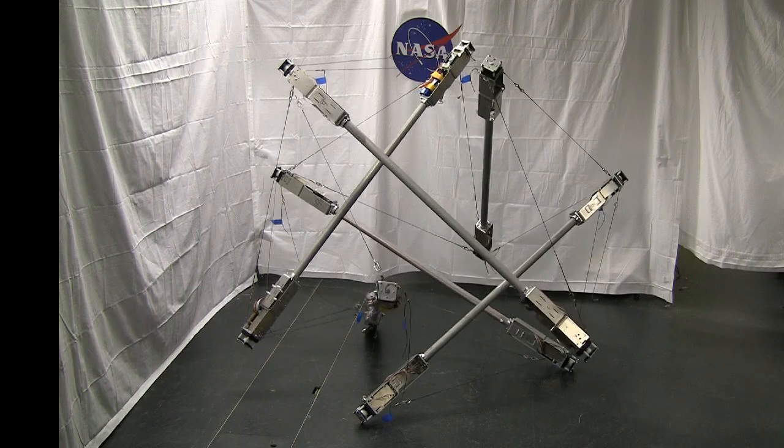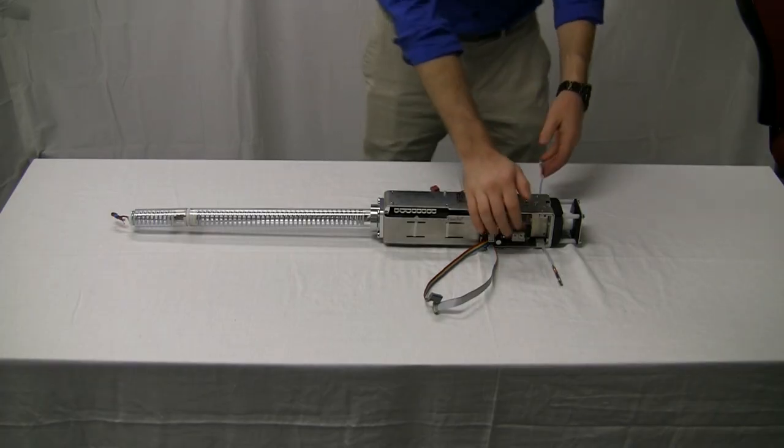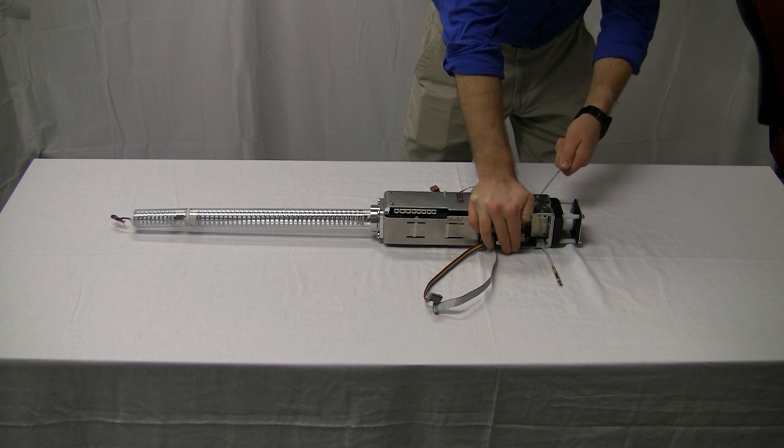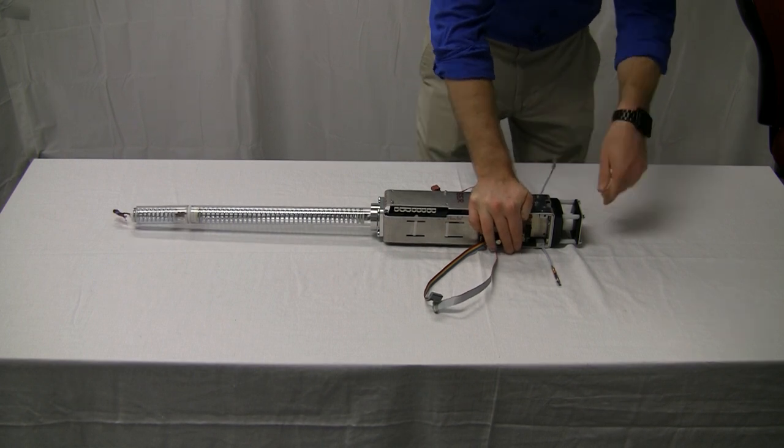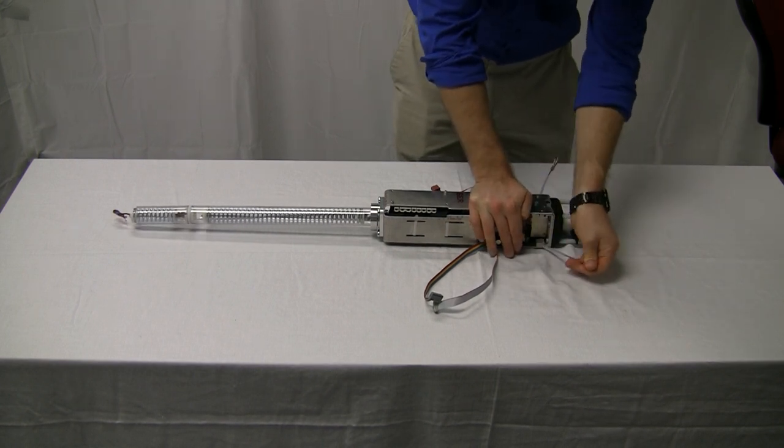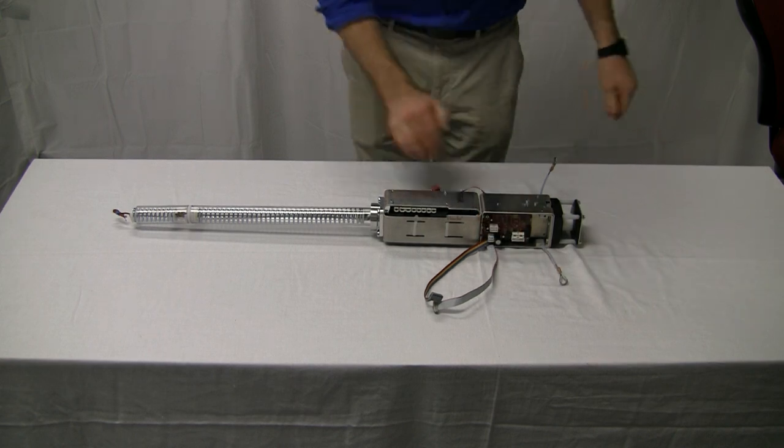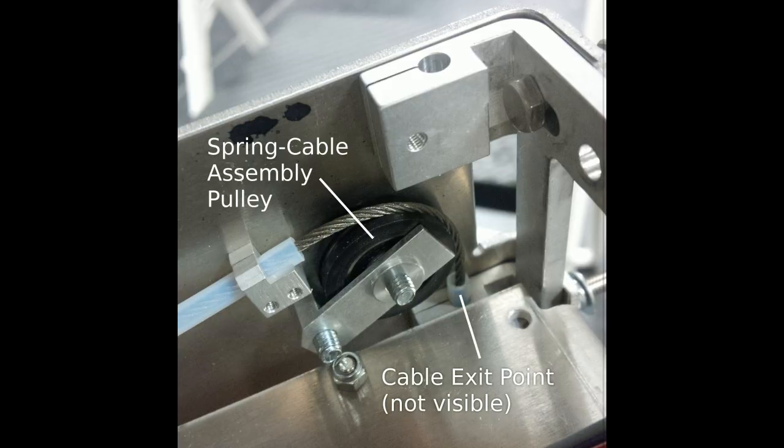Tensegrity robots are made compliant through the use of elastic elements on their cables. Super Ball has springs internal to its strut tubes for this purpose. Steel cables transfer forces from the outside tension network to the internal springs over a series of pulleys and Teflon tubes.